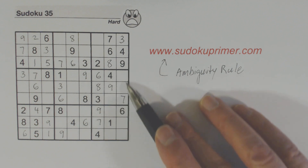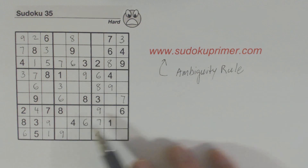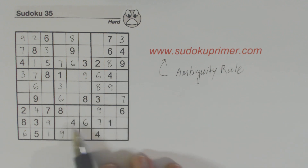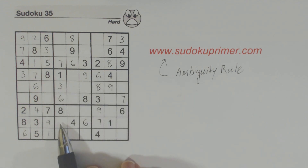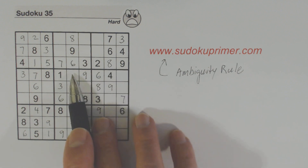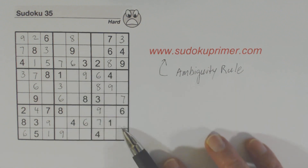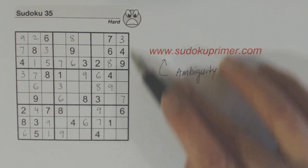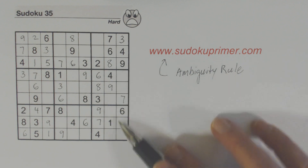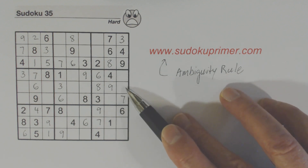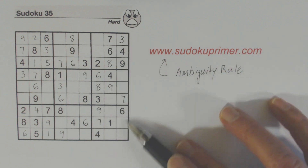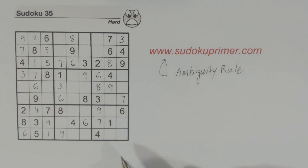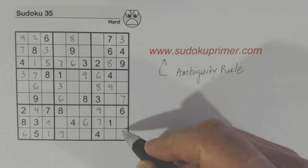Now let's look at column 9 here. We've got only two numbers missing: 2 and 5. And here we're also missing a 2 and a 5. So we have 2, 5 twins in row 8 and 2, 5 twins in row 4 — we know these are 2, 5 twins. There are only two numbers missing in addition to these, so we know what those two numbers are. They're 1 and 8, so we can fill those in.